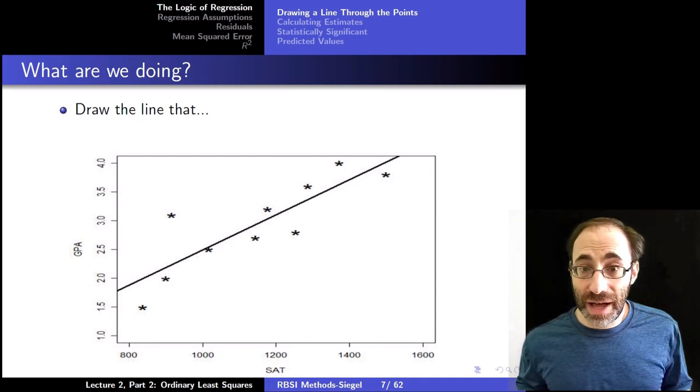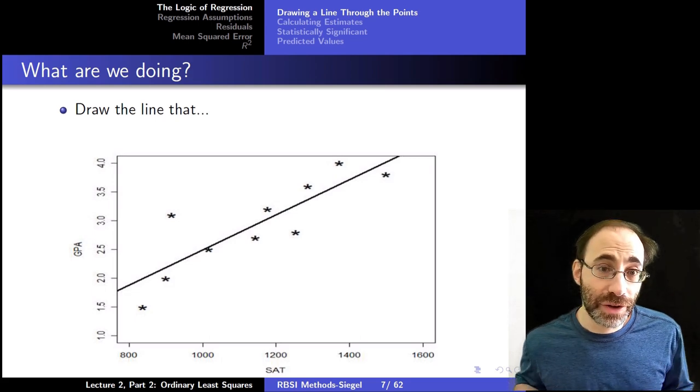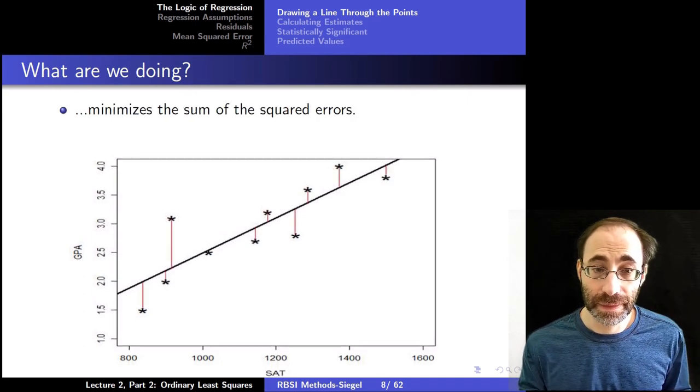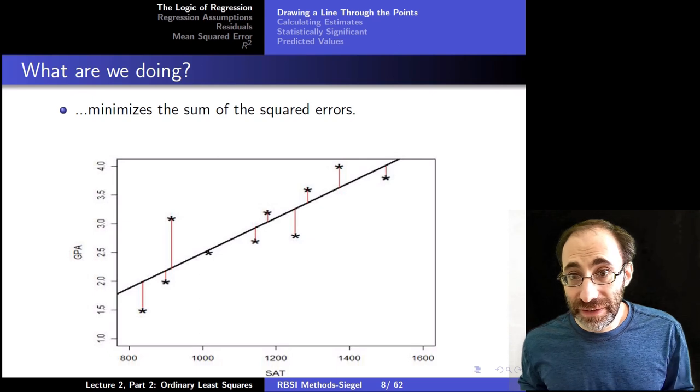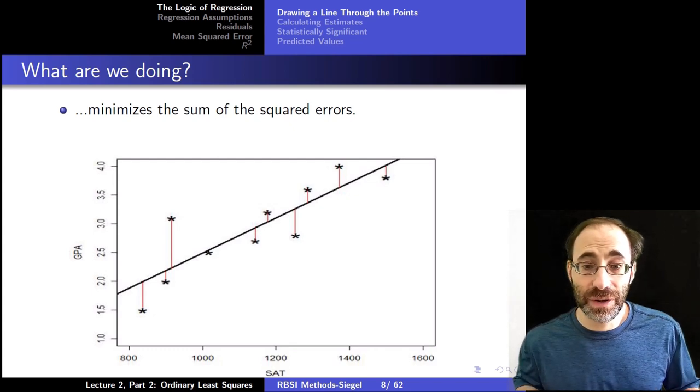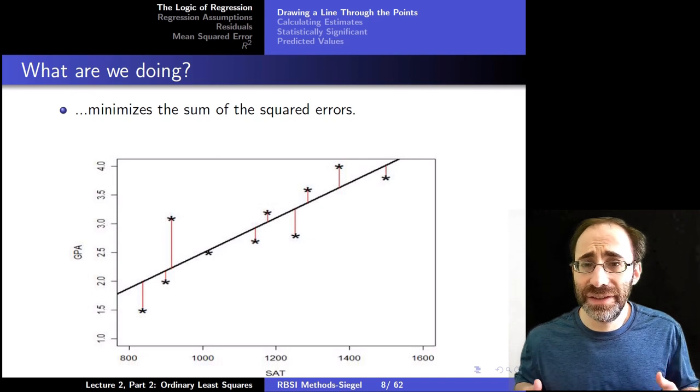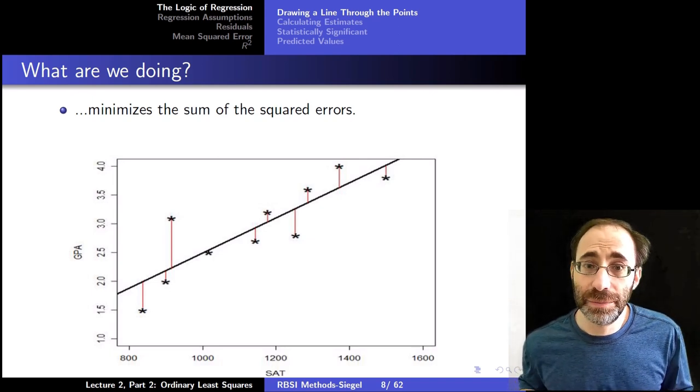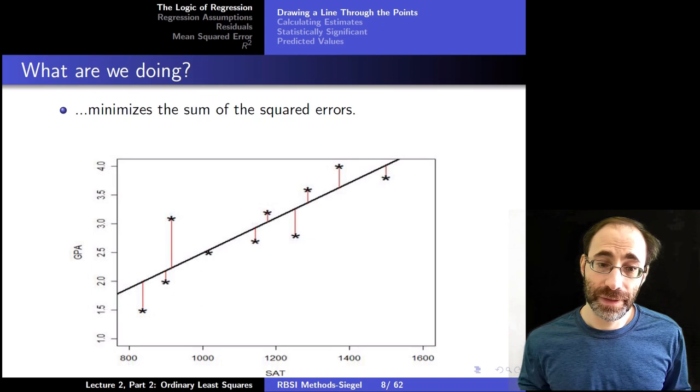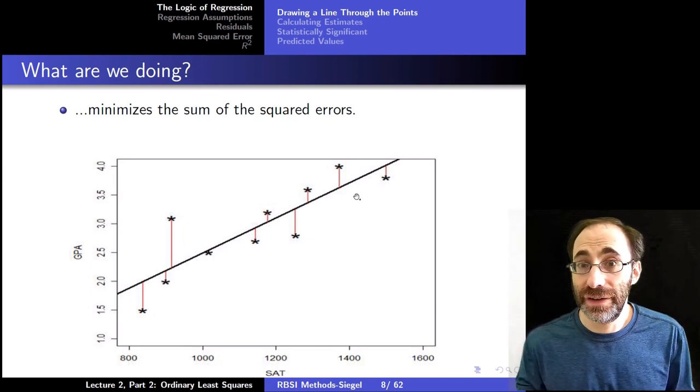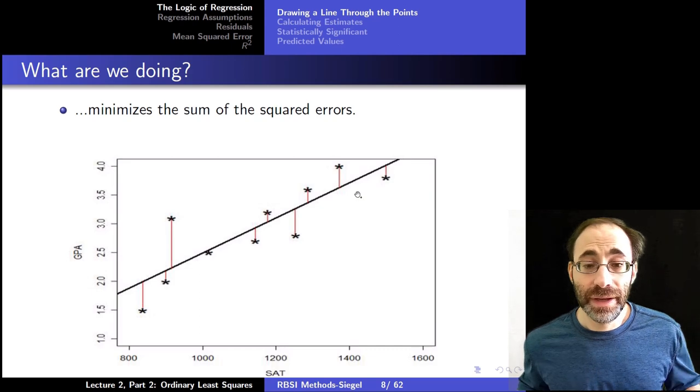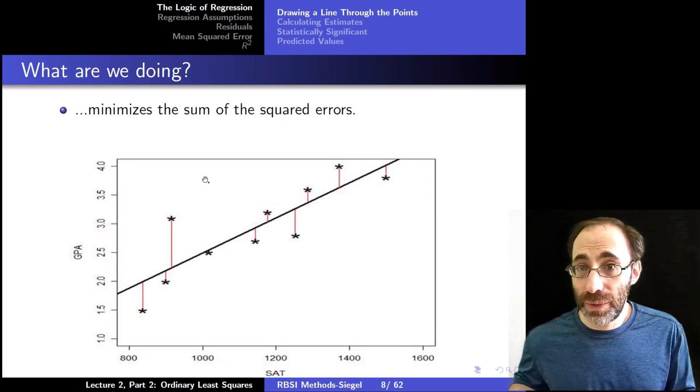The goal is to draw a line through these points, what we call the best fit line, the line that best captures the relationship between our independent and dependent variable. This best fit line is going to minimize the sum of the squared errors, so we have the least square deviations away from the line. The closer our data points are to the line we draw, the better our line fits the data. The further your data points are away from the line, the less well your line predicts the data.